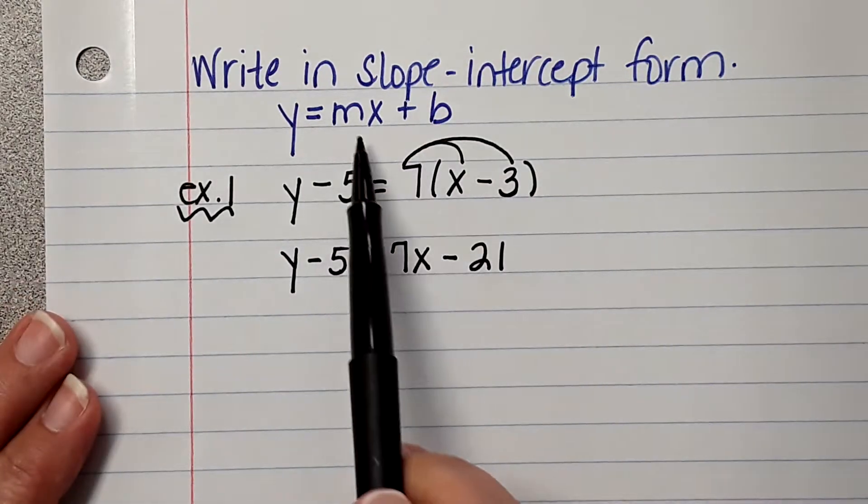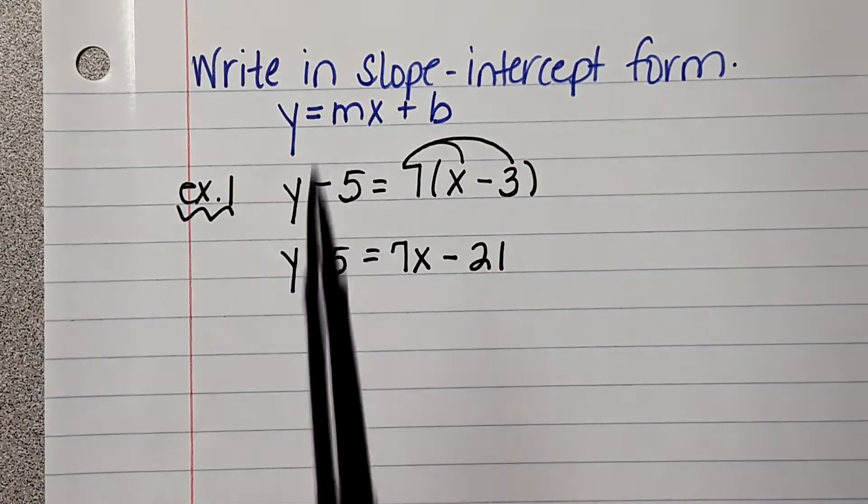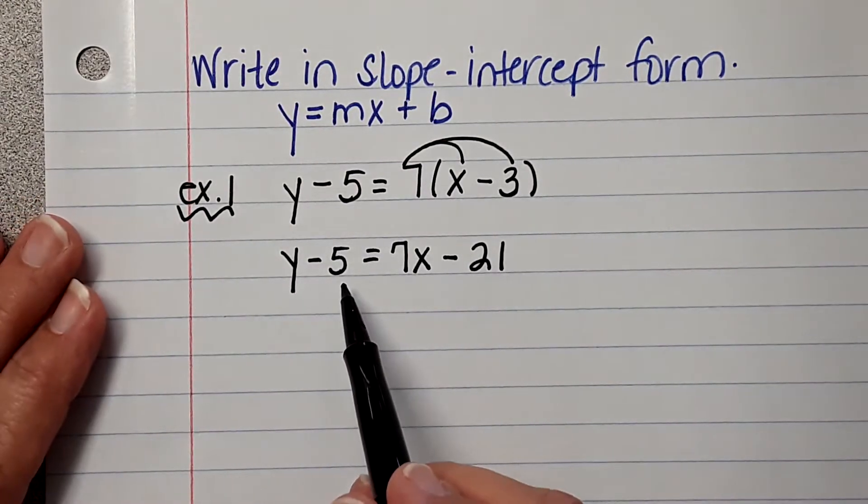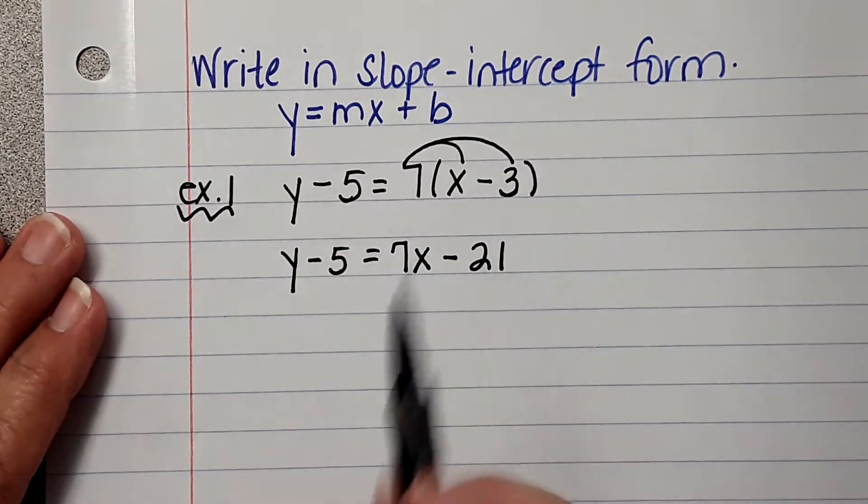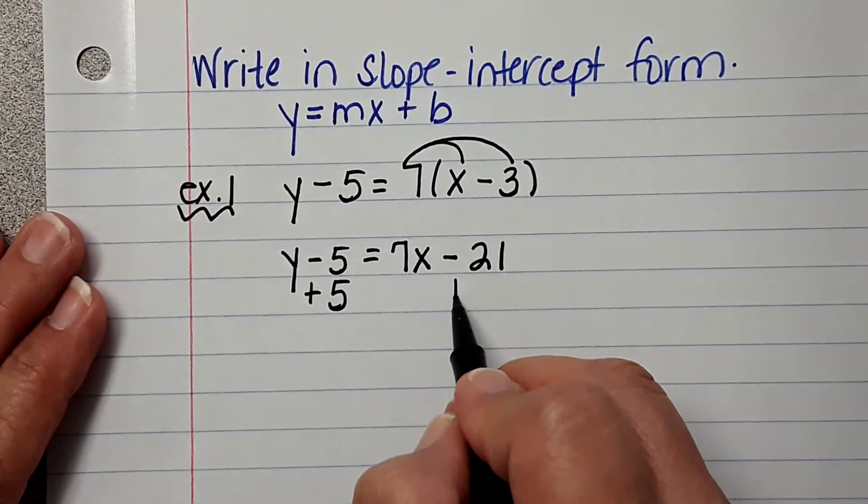Okay, so we're close, right? It's still Y equals MX plus B. So when you see this and you're like, well, how do I know? Remember, Y needs to be by itself. Well, Y still has a negative 5 attached to it.